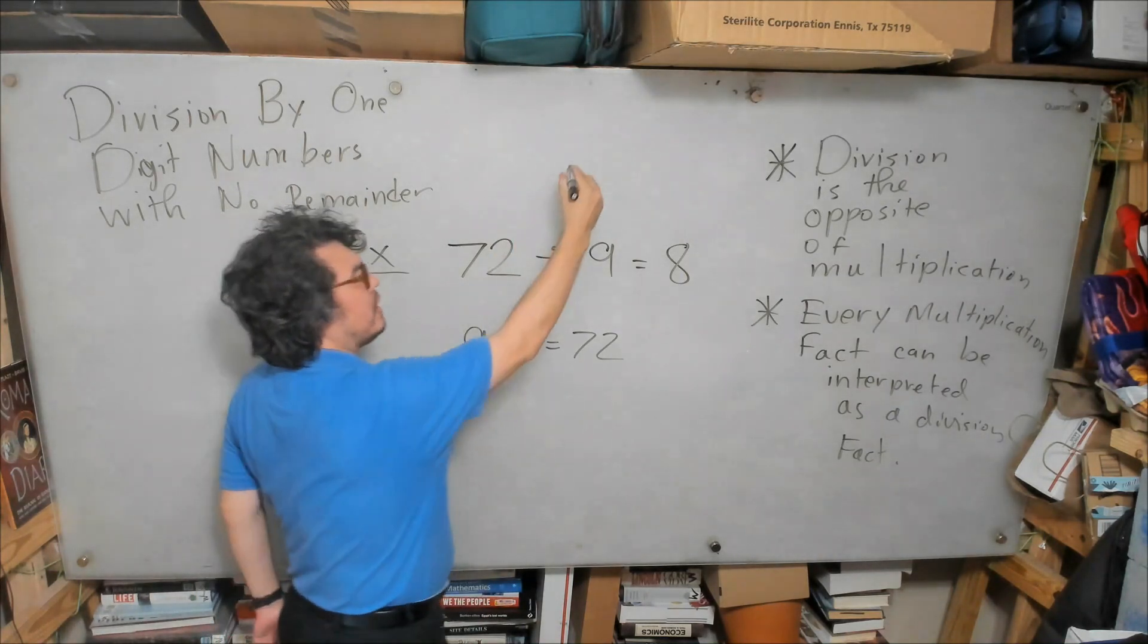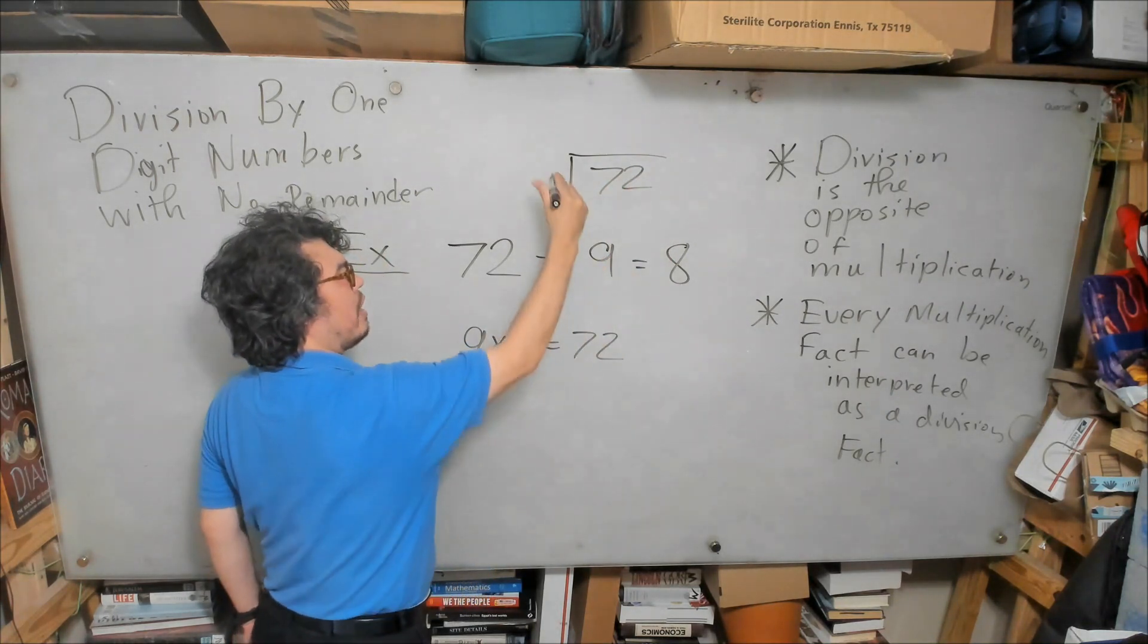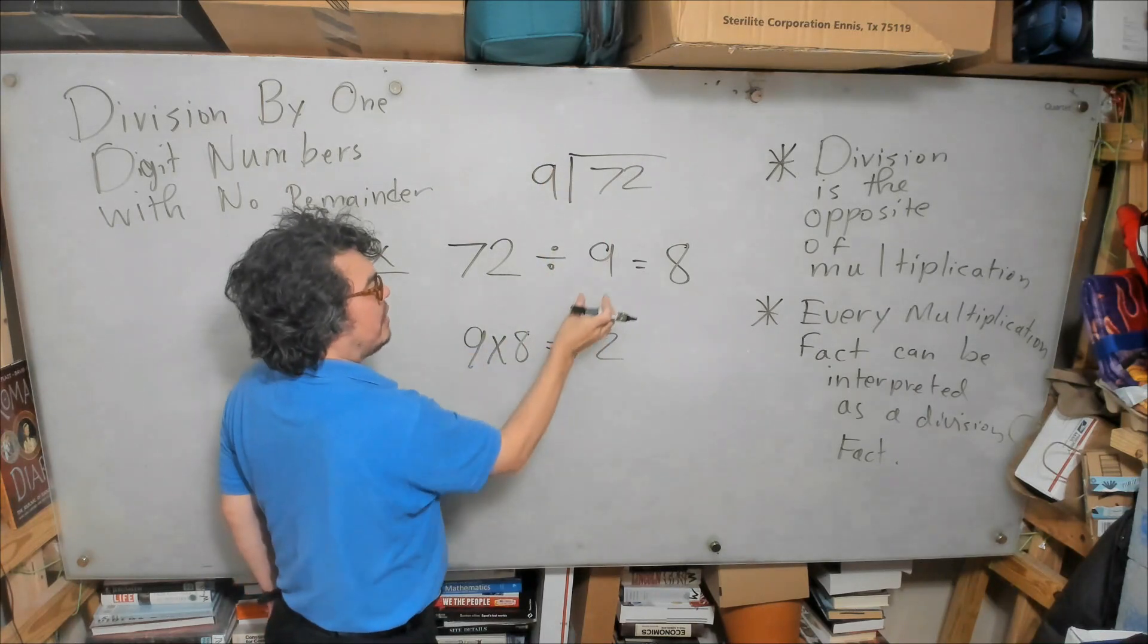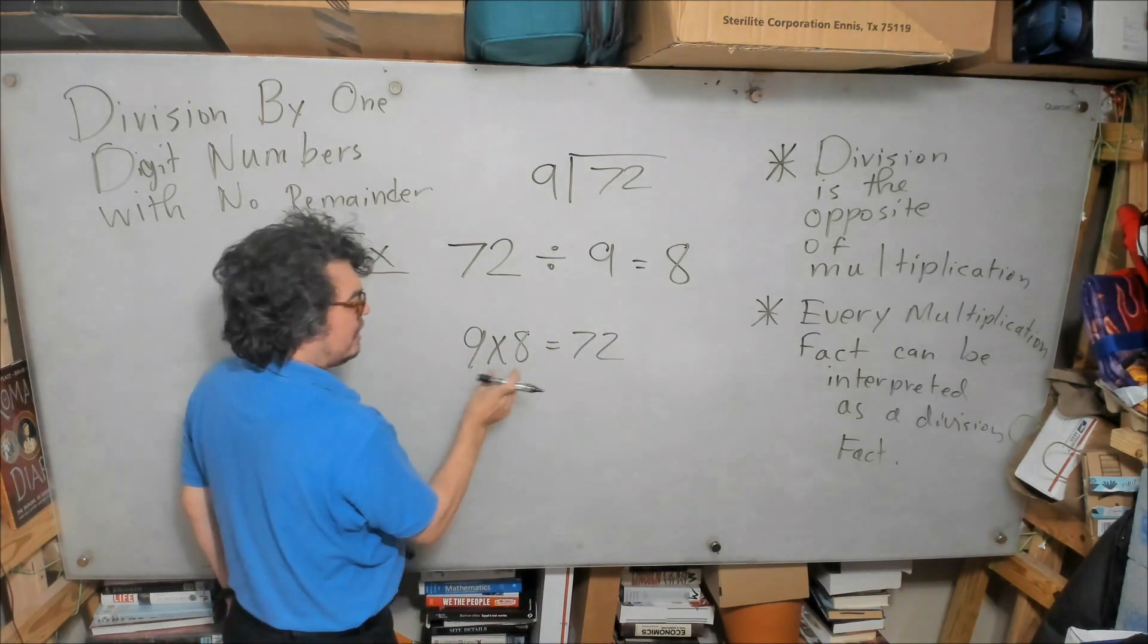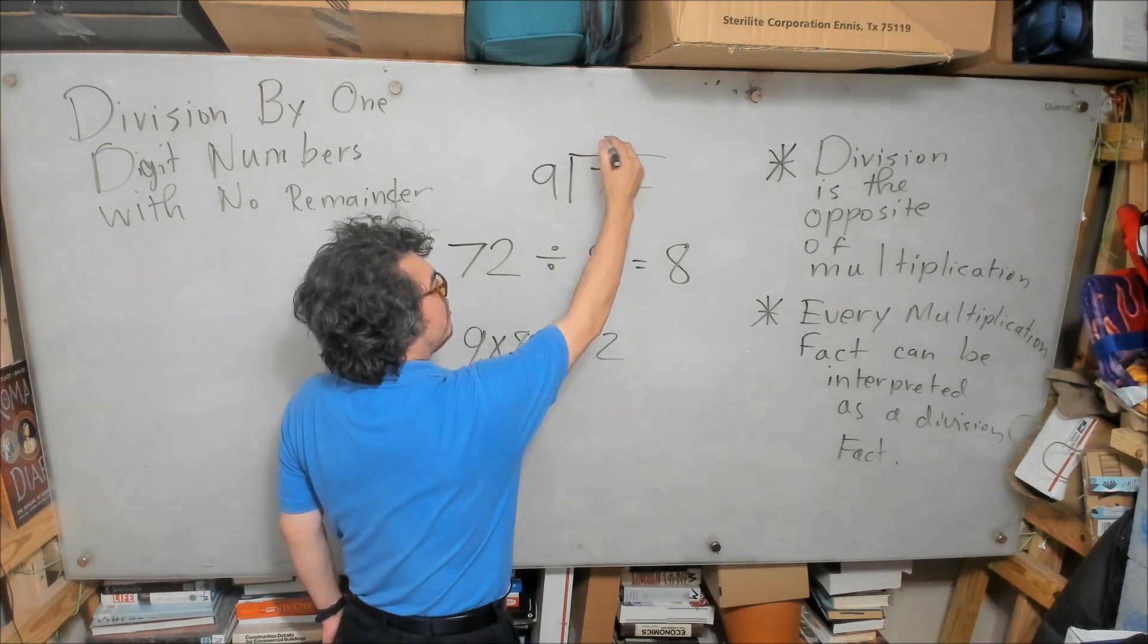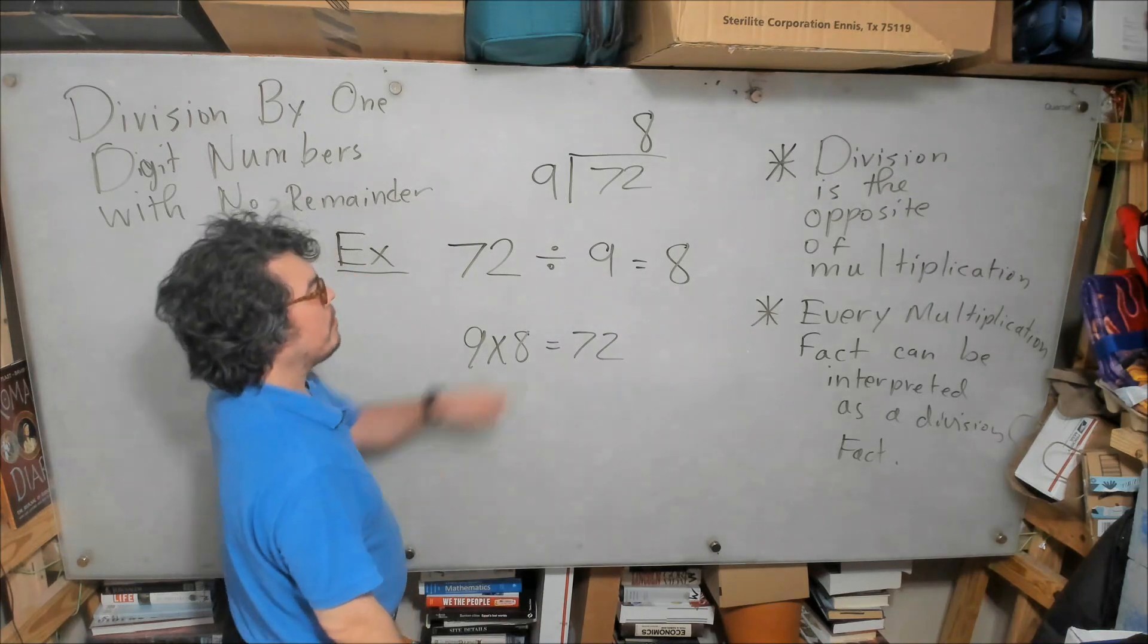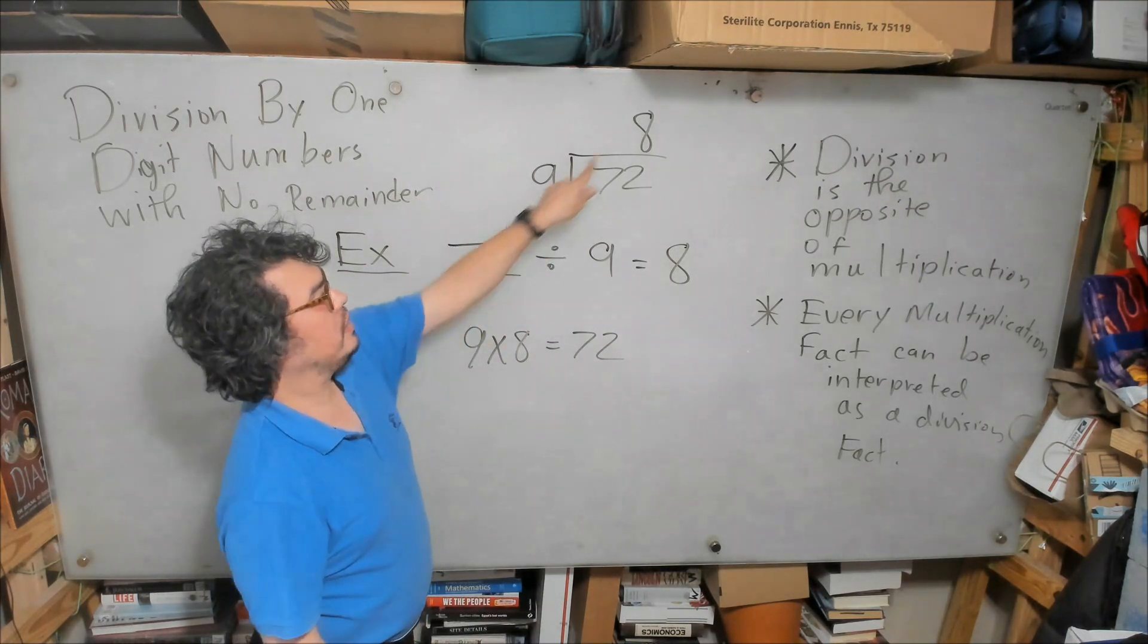72 we would put on the inside of our division house. We would put this number, 9, on the outside, and because 9 times 8 is equal to 72, we would put the 8 not here over the 7, but here over the 2 like this.